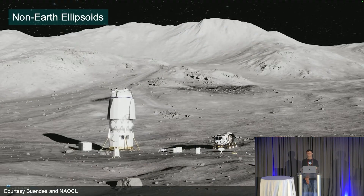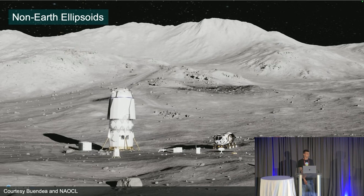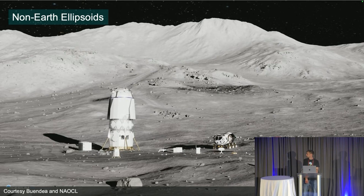Most people using CZM for Unreal are using it to visualize Earth, but not all. That's why we recently added support for custom ellipsoids in CZM for Unreal. With custom ellipsoids, you can bring in an accurate model of other places in the solar system — for example, using Cesium moon terrain like you see here.